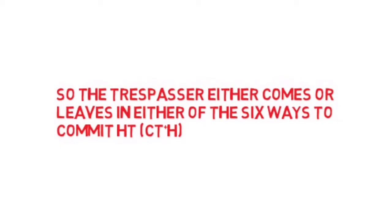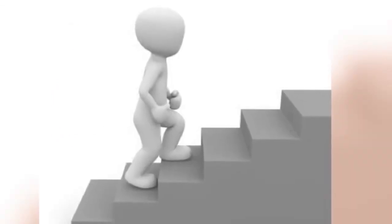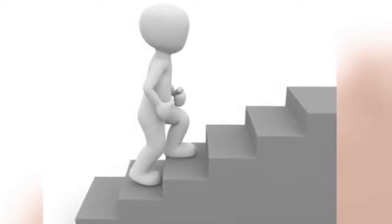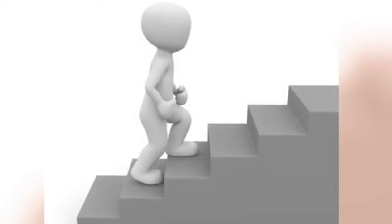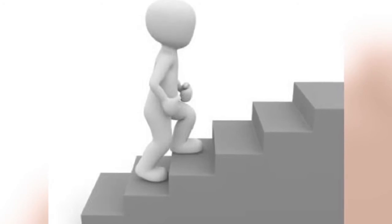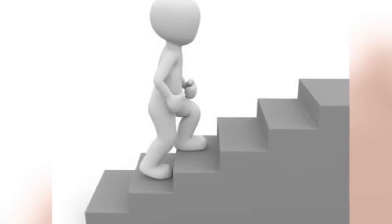So house trespass plus one of these six ways equals house breaking. If you understand the nuances between these different kinds of trespass, you'll never have any issue. Think of it like a staircase: it starts with criminal trespass, then you add house, then preparation to conceal oneself, then night. On the other hand, criminal trespass + house + one of these six ways = house breaking.